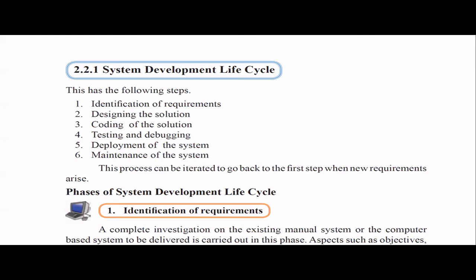In this life cycle, there are six steps for your syllabus. Make sure you follow your own syllabus which has only six steps. The first is identification of requirements, then design, then coding, then testing and debugging, then deployment of the system, and finally maintenance.